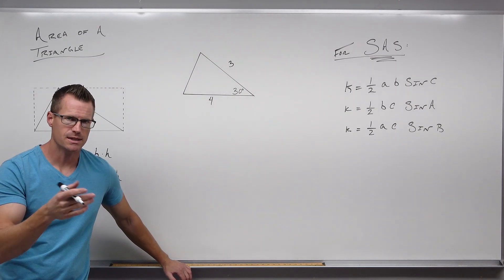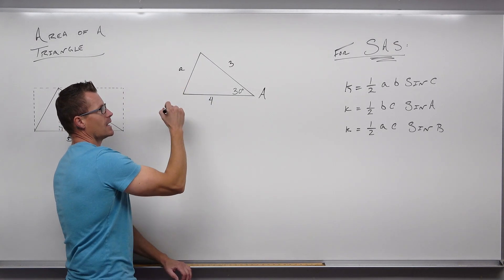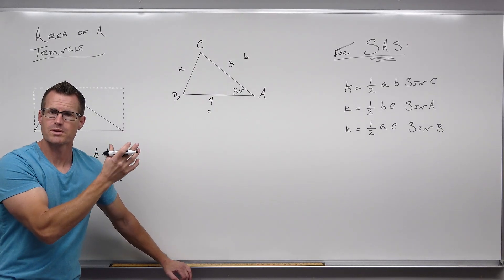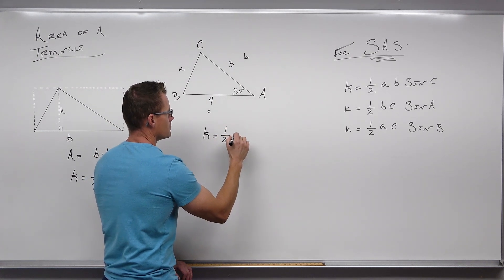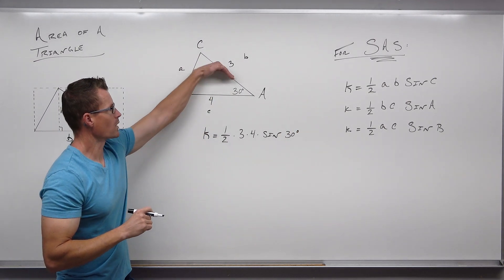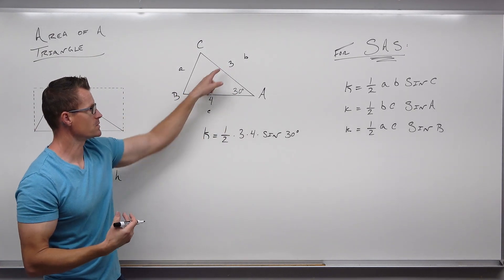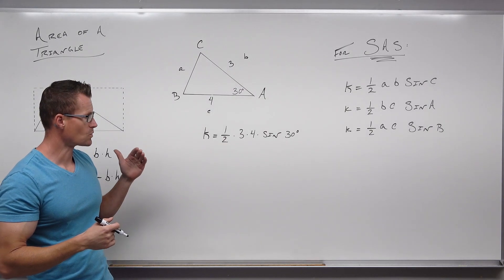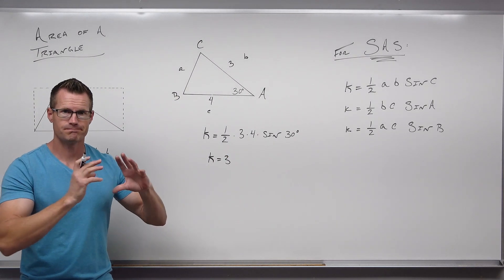One half times the two sides, times sine of the angle between them. Sine of 30 degrees is one half. That gives you 3. So the area of this triangle is 3 square units. That's really great — you don't have to use right triangle trigonometry separately. It's all in one. We've already done the right triangle trig and made the substitution so this was possible.